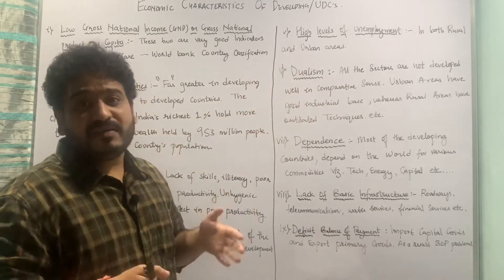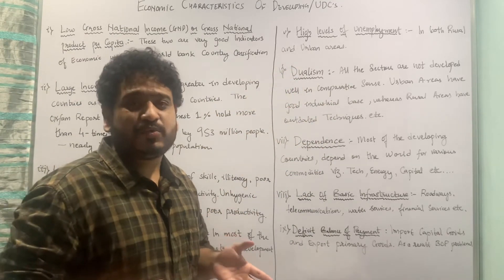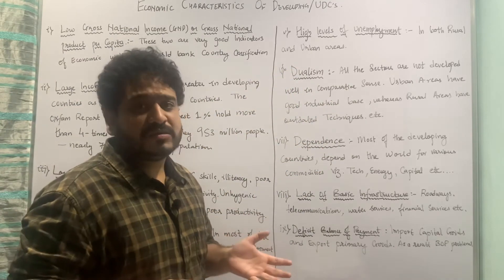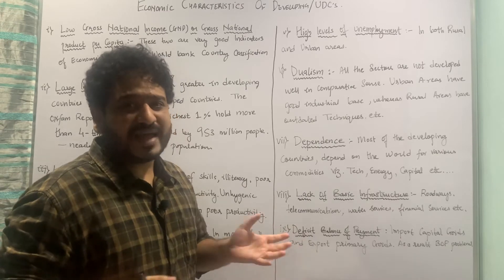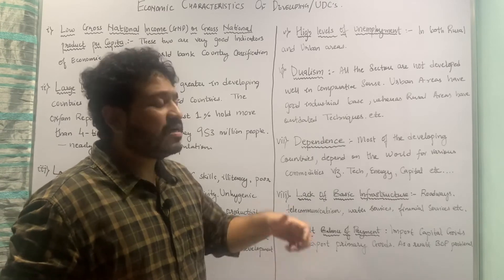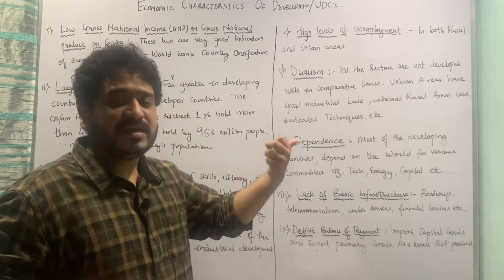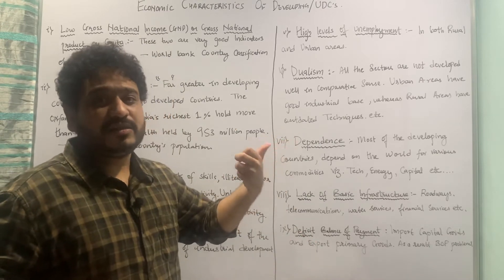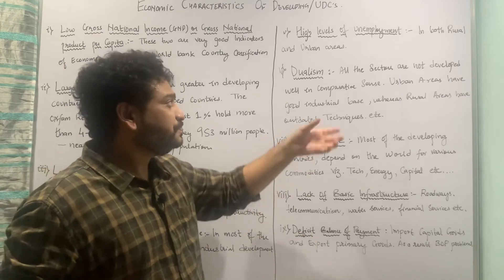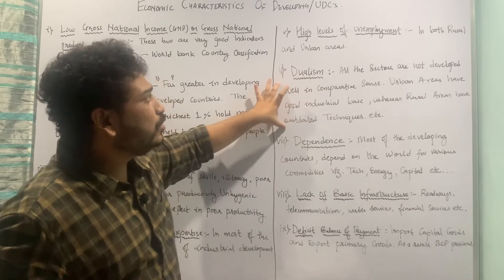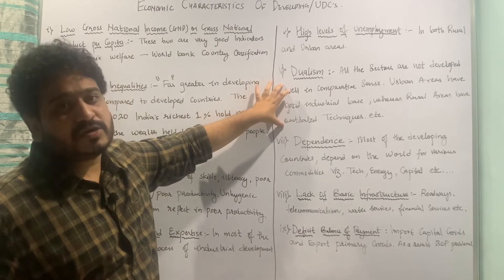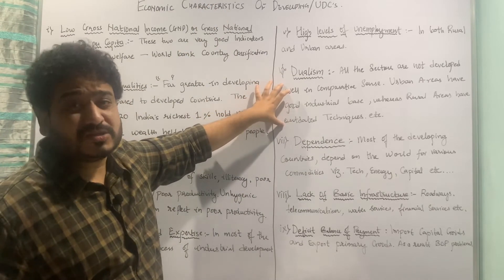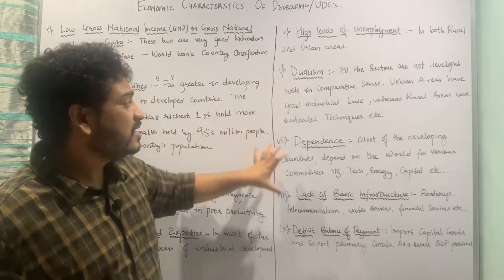Dualism is one reason for migration because in urban areas you get good housing, good technology, and good access to services — which is not available in rural areas. Hence, dualism is a characteristic of least developed, underdeveloped, or developing countries.